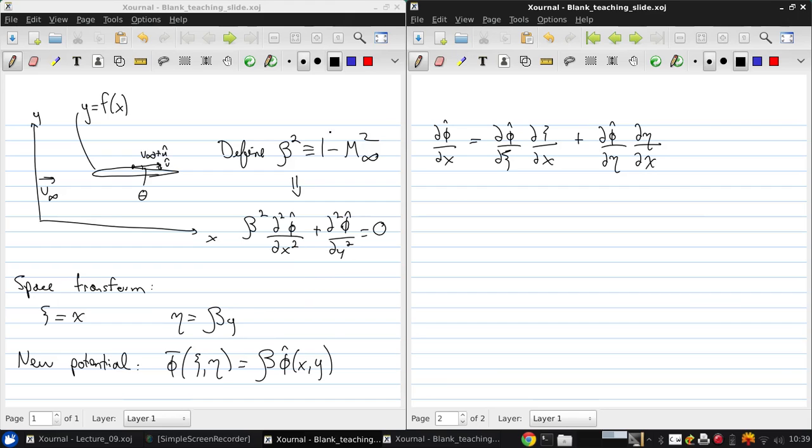Now, looking at this definition, it's easy to see that d xi dx is simply 1, and d eta dx is 0.